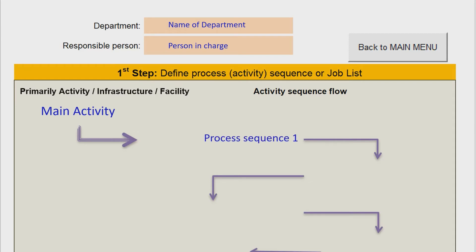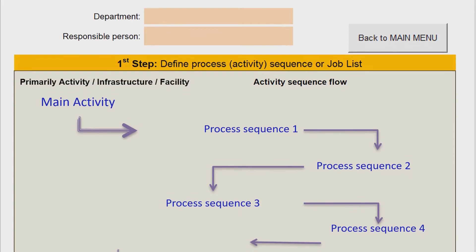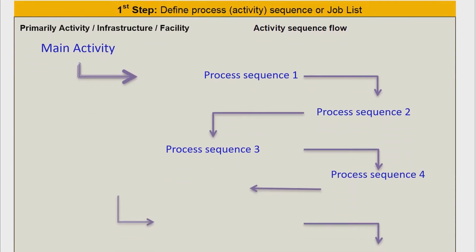Next, list all the tasks, work, or activities related to completing the primary process — what we call a process sequence. This is important so that all work done can be covered in detail before each process is assessed for hazards and risks. Now the job listing process and recording of the sequencing process are complete.